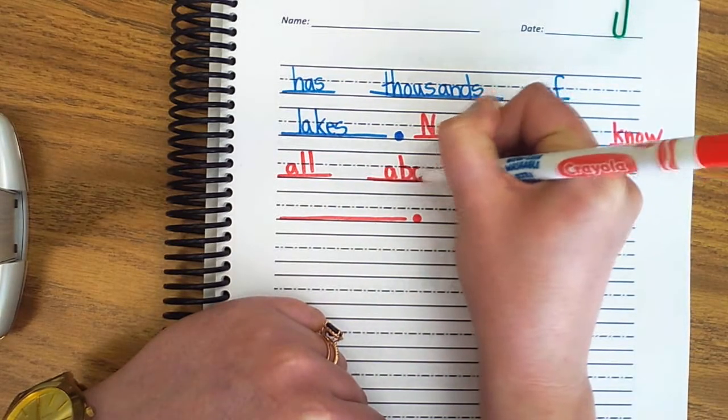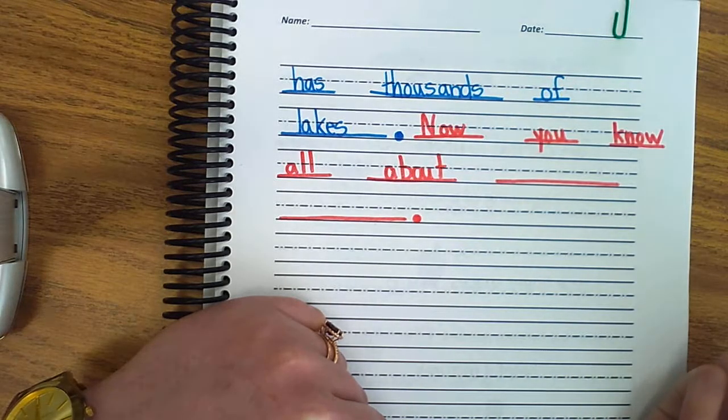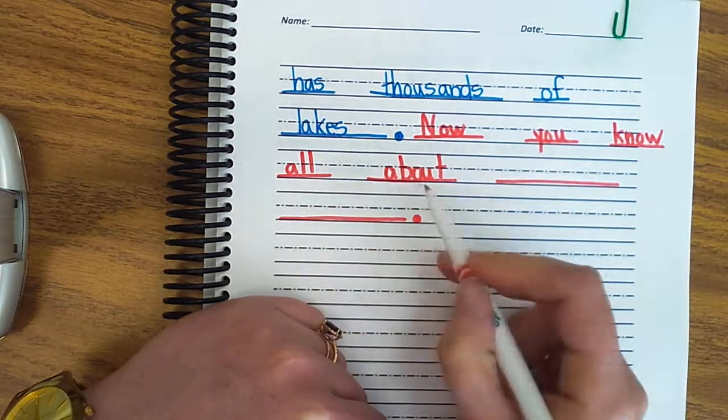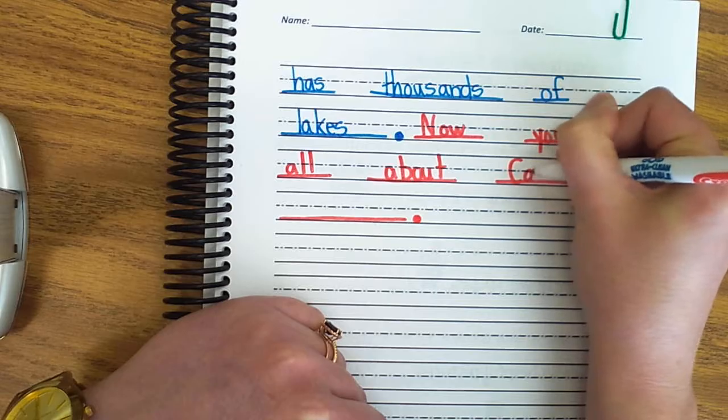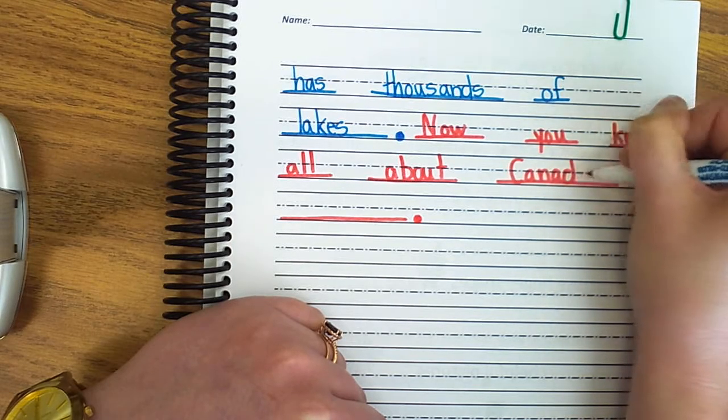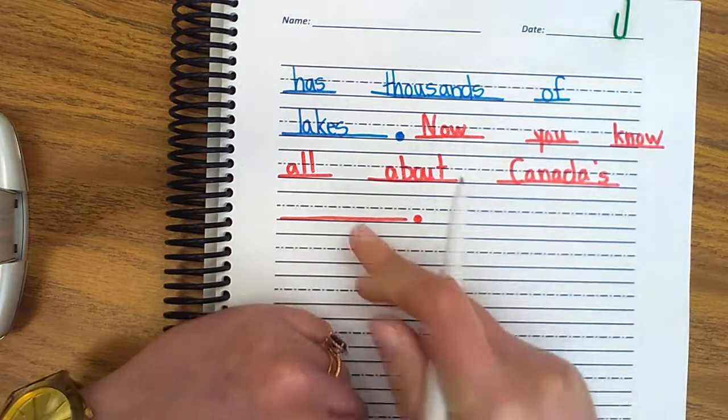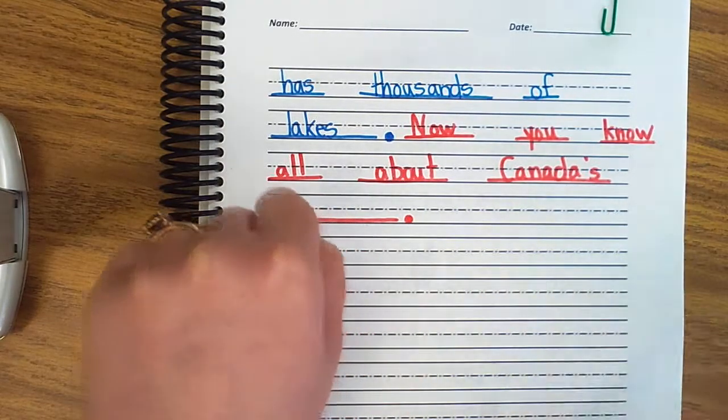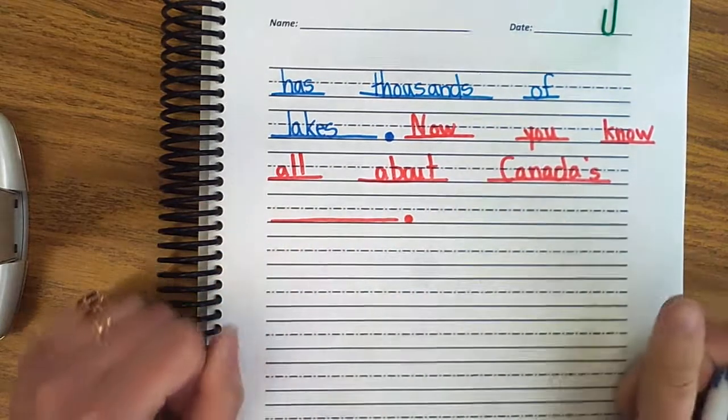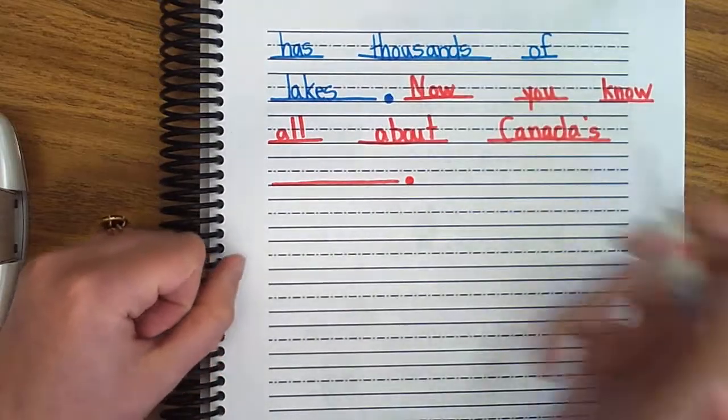About. A-B-O-U-T. About. A-B-O-U-T. About. Now you know all about. Canada's. I can just go back to the text if I need to. Landforms. That compound word. Landforms. Two smaller words stuck together to make a bigger word.